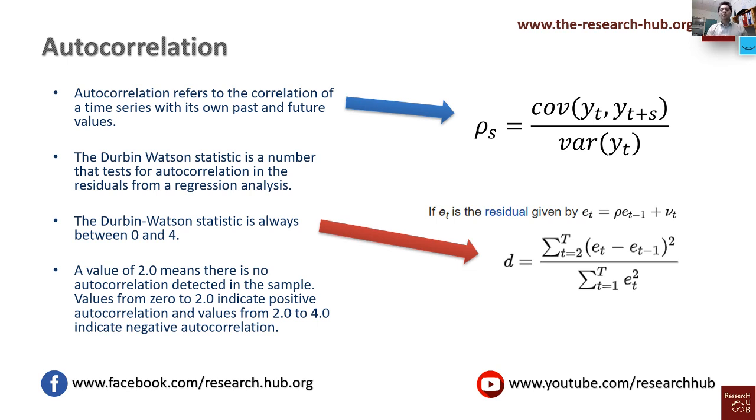Approximately, if we use 2 multiplied by (1 minus ρ), where ρ comes from the equation, we will also get the value of d approximately. Although we talked about a value of 2 for no autocorrelation, normally as a rule of thumb you can use from 1.7 to 2.3 or 2.4 to indicate no autocorrelation problem in the data.